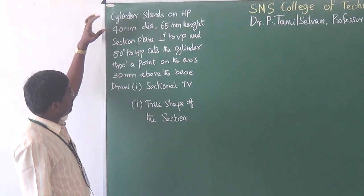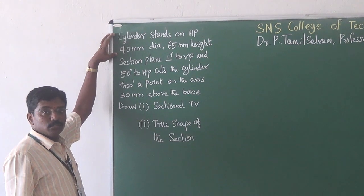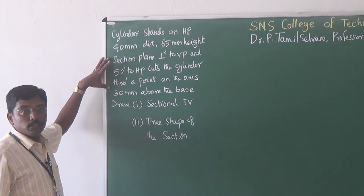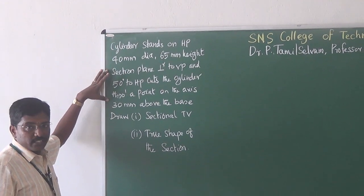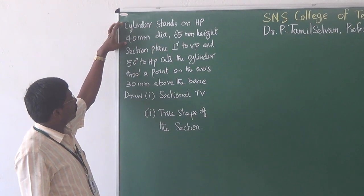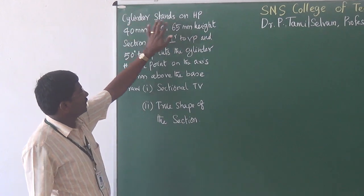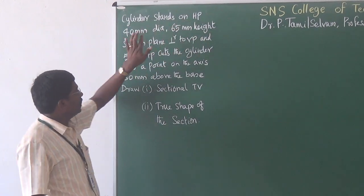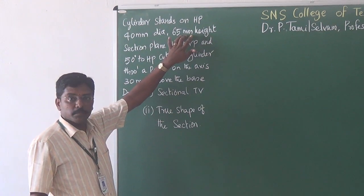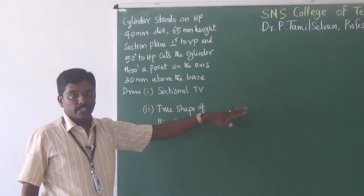As in previous problems, first we have to look at the data related to the projection of solid, then data related to the sectional plane, and what is asked. Here, data related to the projection of solid: the name of the solid is cylinder, it stands on HP, having a diameter of 40 mm and height of 65 mm. That is enough to complete the projection of solid.